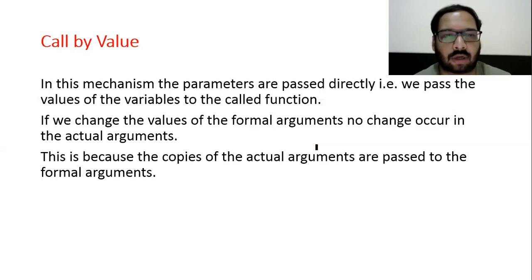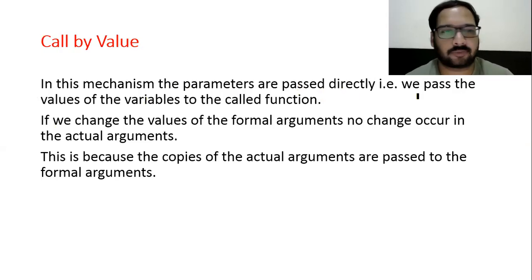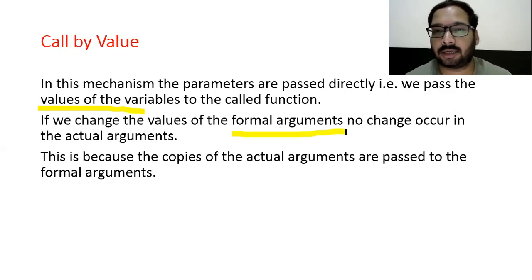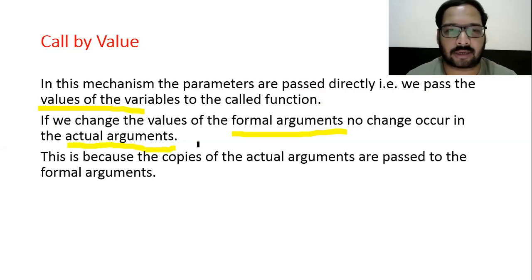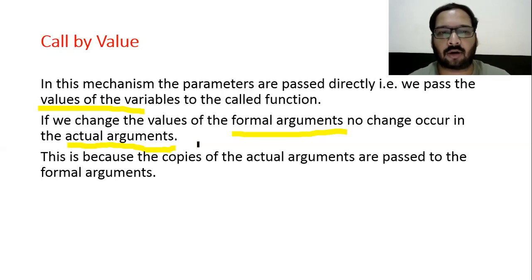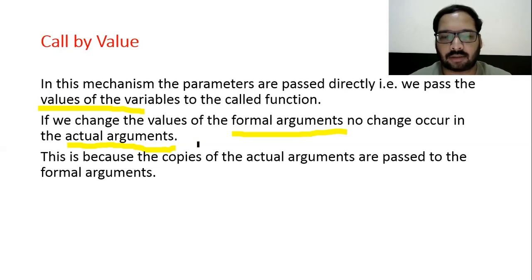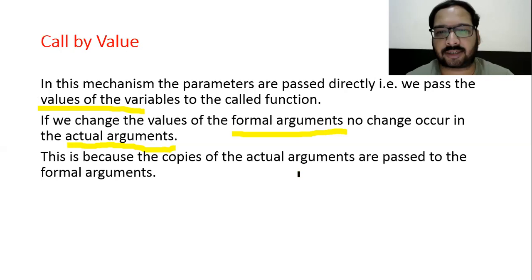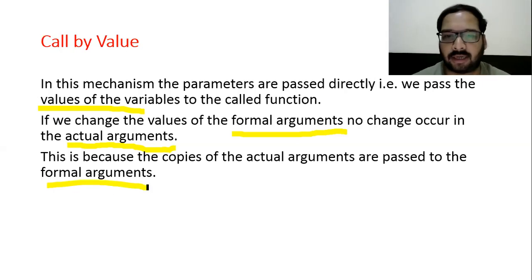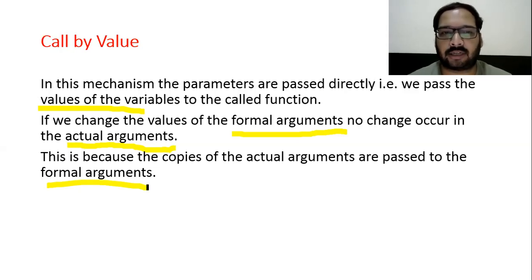Call by value: in this mechanism the parameters are passed directly — we pass the value of the variable to the called function. If we change the value of the formal argument, no change occurs in the actual argument, because the copies of the actual arguments are passed to the formal arguments. There is no relationship between actual and formal arguments, so they have separate memory, and a change in one does not reflect in the other — that only happens when you create a pointer relationship.